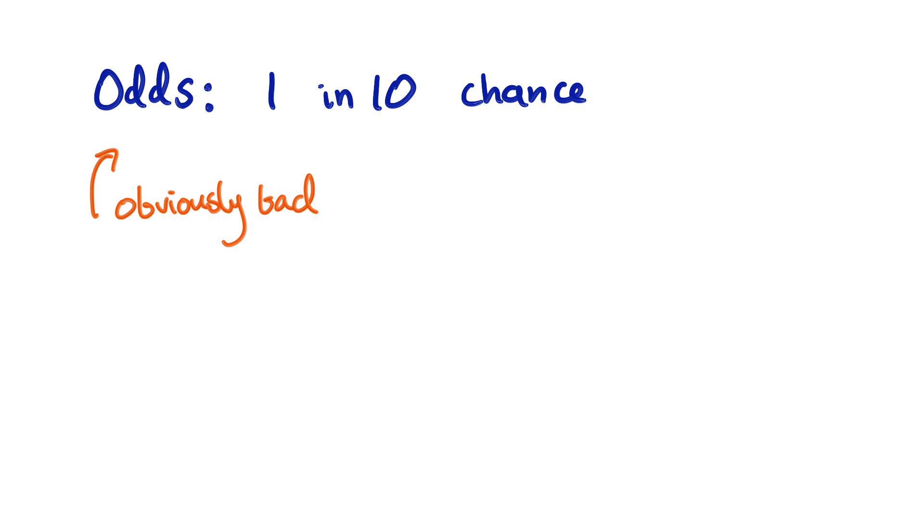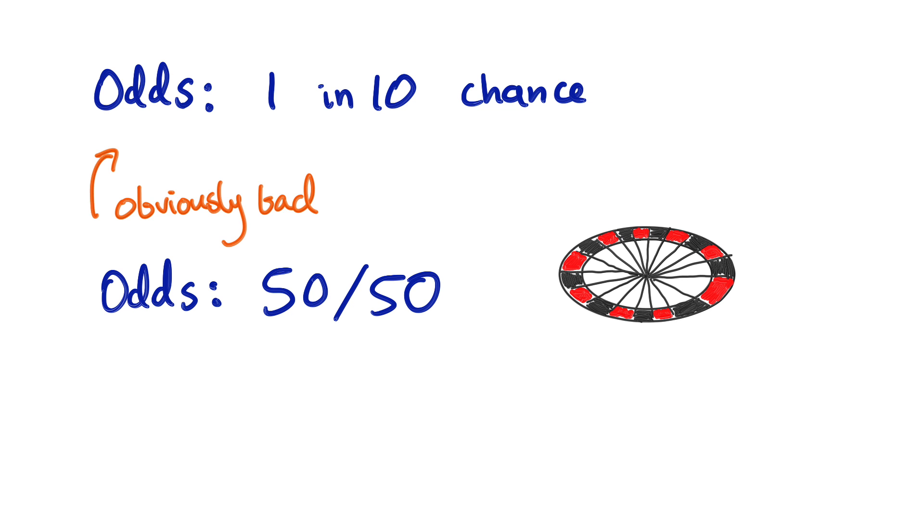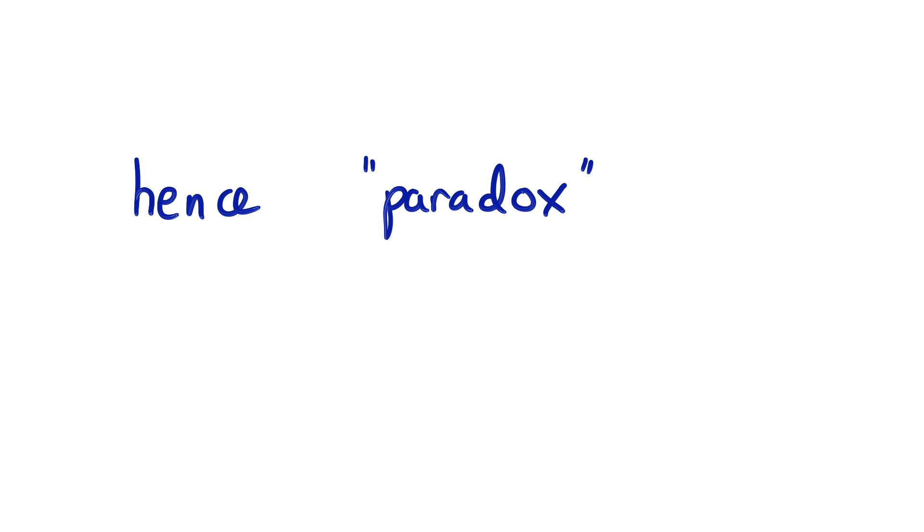This strategy doesn't actually work, it's obvious why not when the odds are like this, but when the odds are at 50-50, like in the roulette game, it's hard to see what the problem is. And that's where the paradox is.